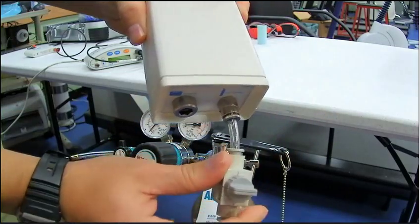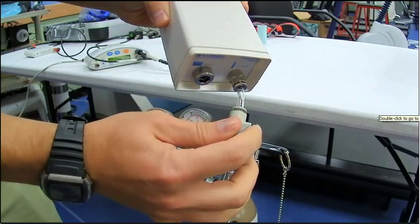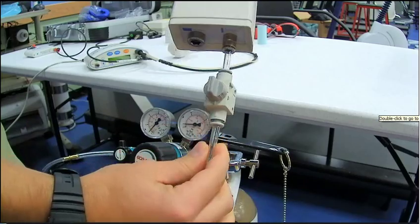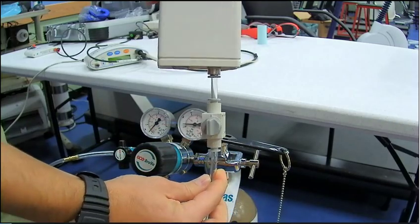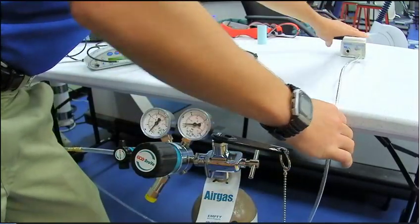You're going to grab the gas calibration box, and you're going to open this knob so that it's parallel with the tube, which means it's open. It's going to allow air to flow into the box.